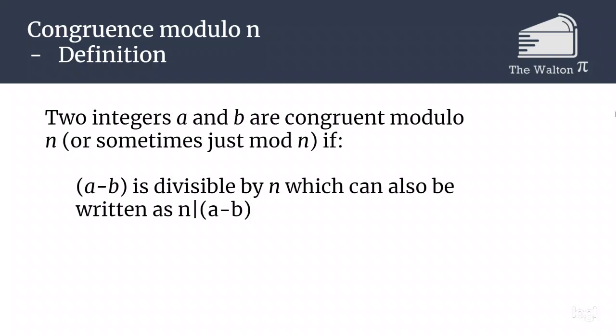Another way that you can think of this is two numbers are congruent if they have the same remainder when dividing by n.